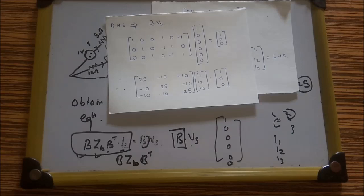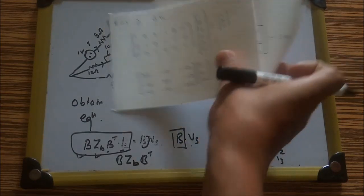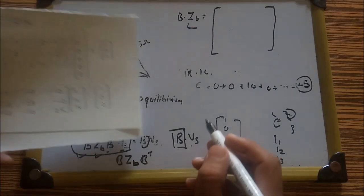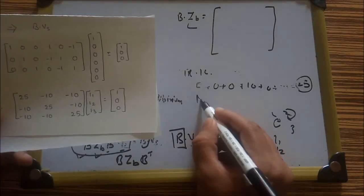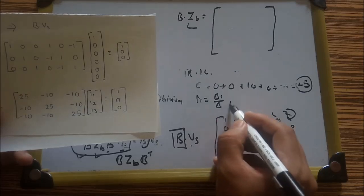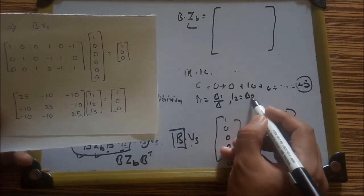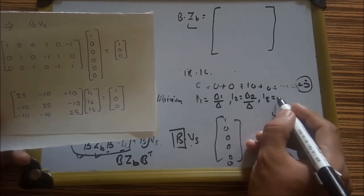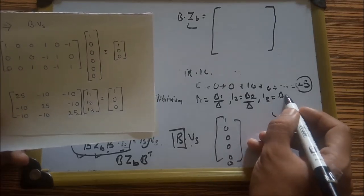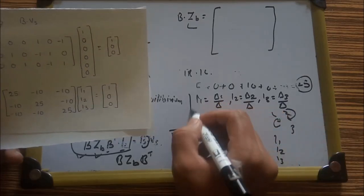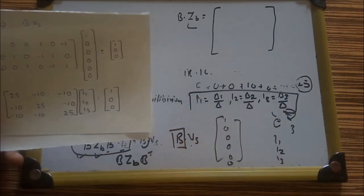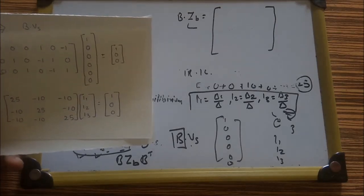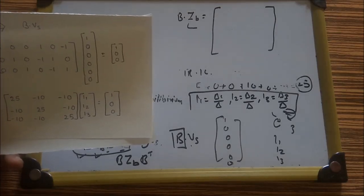The final network equilibrium equation in matrix form is: [[25,-10,-10],[-10,25,-10],[-10,-10,25]] × [I1, I2, I3]ᵀ = [1, 0, 0]ᵀ. If the exam asks to find I1, I2, and I3, we use Cramer's rule: I1 = Δ1/Δ, I2 = Δ2/Δ, I3 = Δ3/Δ. This completes the network equilibrium equation with step-by-step explanation.